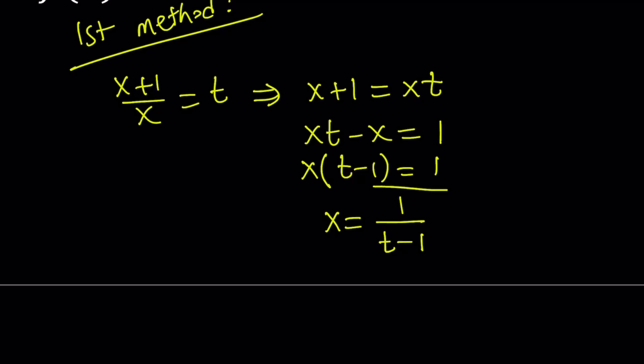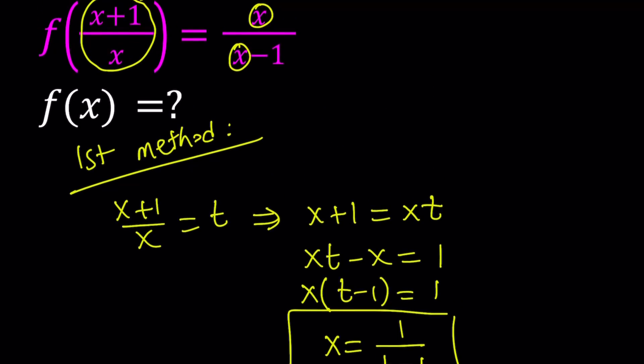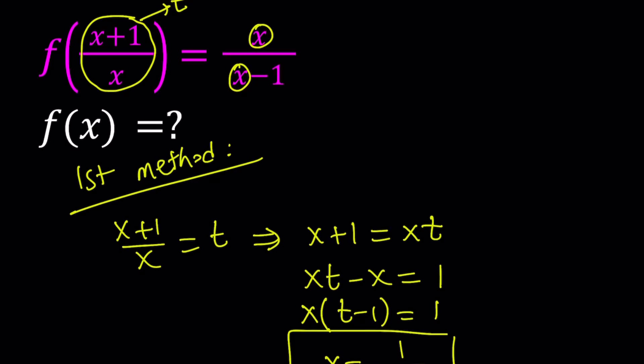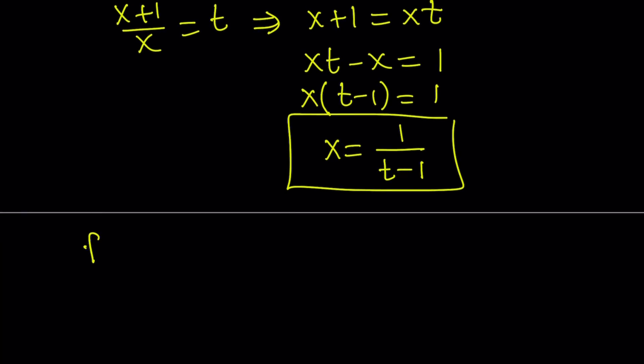Great. That's something we're going to use in our equation. Let's go ahead and substitute that on the right hand side. Now when you substitute x equals 1 over t minus 1 on the left hand side, you're definitely going to get a t, so we don't really have to do it again. But if you want you can do it.